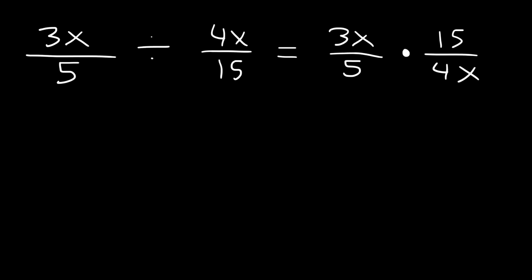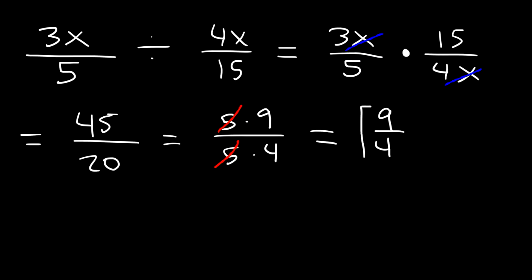Right now we can cancel an x variable and then we can multiply across. 3 times 15 is 45. 5 times 4 is 20. Now we could simplify 45 and 20. 45 is 5 times 9. 20 is 5 times 4. So we can cancel a 5. Therefore the final answer for this problem is 9 divided by 4.